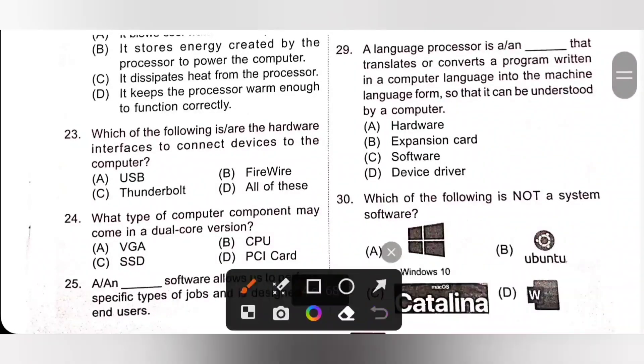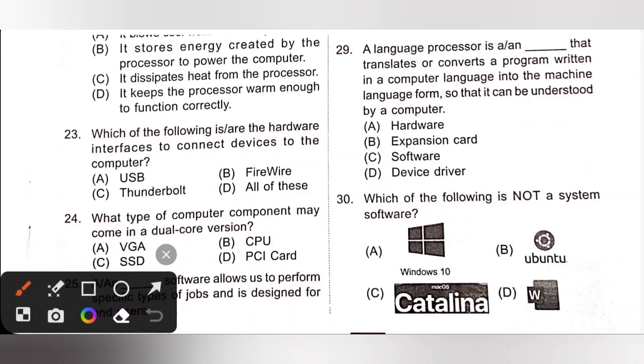Question 29. A language processor is a blank that translates or converts a program written in computer language into a machine language form so that it can be understood by a computer. A language processor is a software. Option C is the correct answer.